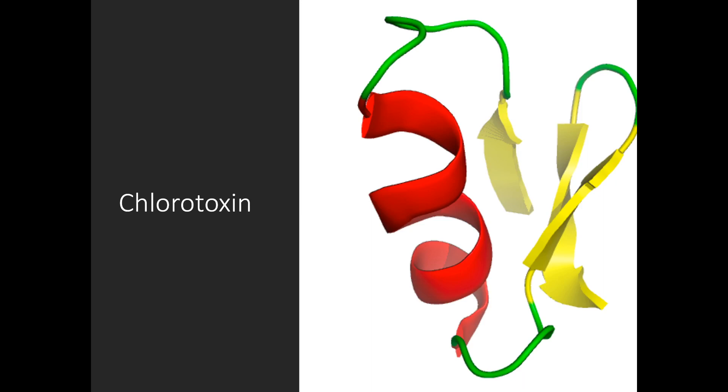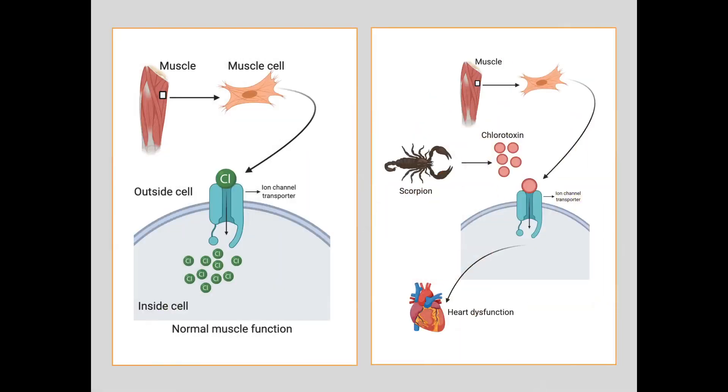But how does this chlorotoxin work? For the normal functioning of muscle cells in a human, the cells require chloride ions. These chloride ions are transported with the help of ion channel transporters from outside the cell to inside the cells, and these chloride ions provide flexibility to the muscles.